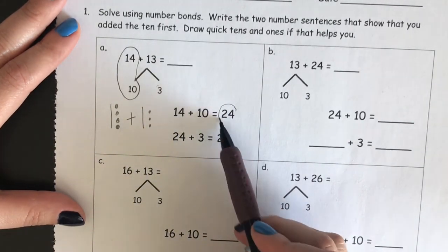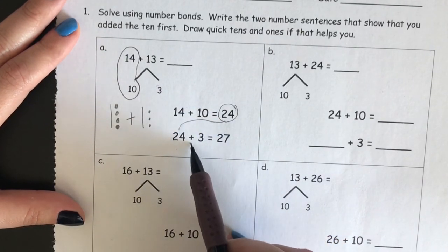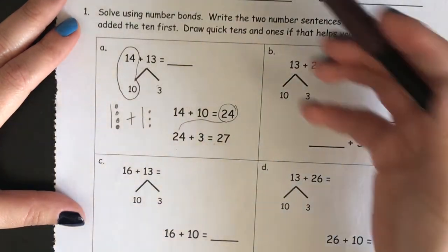I'm going to circle these two, that is where our first number sentence comes from. Fourteen plus ten equals twenty-four. Now, I know that we bring down the answer, twenty-four plus three equals twenty-seven.